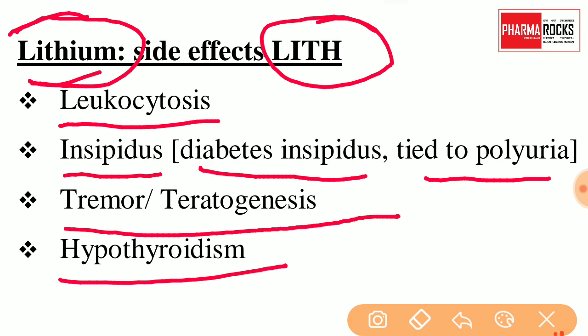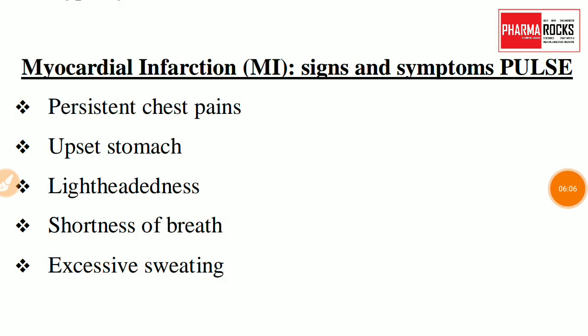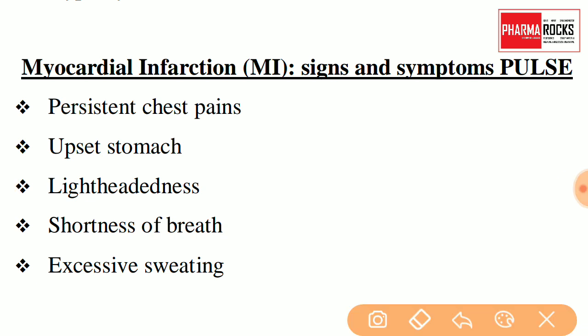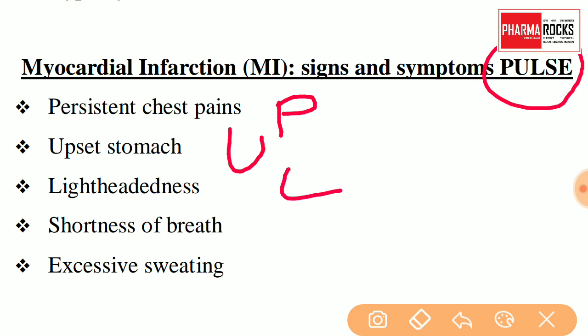The next trick is for Myocardial Infarction, also called MI. The short form for its signs and symptoms is 'PULSE'. P stands for Persistent Chest Pain, U stands for Upset Stomach, L stands for Lightheadedness, S stands for Shortness of Breath, and E stands for Excessive Sweating. So PULSE represents the signs and symptoms of Myocardial Infarction.